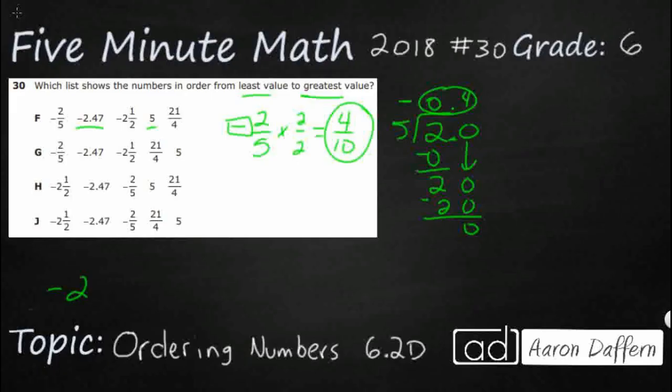We've got negative 2.47. We've got 5 and I'm going to go ahead and make that 5.00 just to make it all work. Now I've got my negative 0.4 and let's go ahead and add a zero there to make it 0.40.